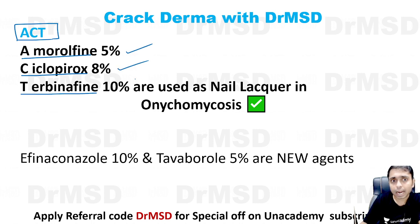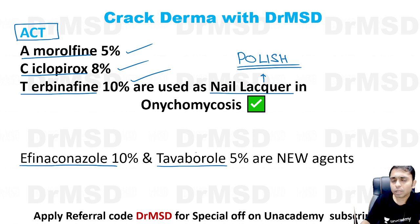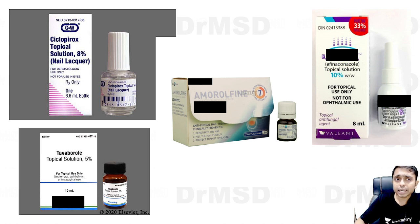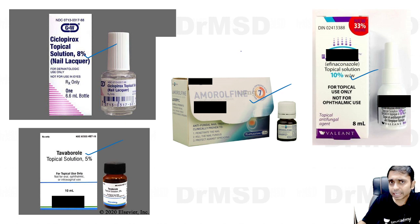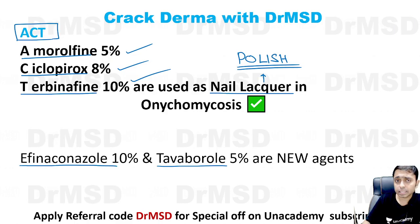Amorolfine is 5%, Ciclopirox is 8%, and Terbinafine is 10%. Apart from this, there are two other agents: Efinaconazole and Tavaborole. Please remember what nail lacquer means — it is a dermatological term for nail polish, but with drug in these particular concentrations. Efinaconazole is 10% and Tavaborole is 5%. Terbinafine is in trial phases but is also available as a topical nail lacquer for onychomycosis.